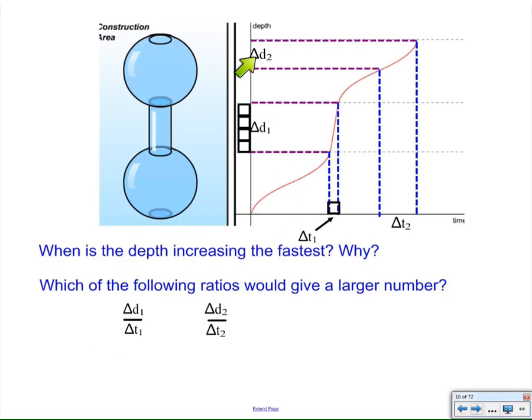Here's a different depth, and here is a longer amount of time. If we take the Δd₂, change in d₂, and divide it by a ratio, the change, or compare it in a ratio to the change in t₂, you're going to get another number.